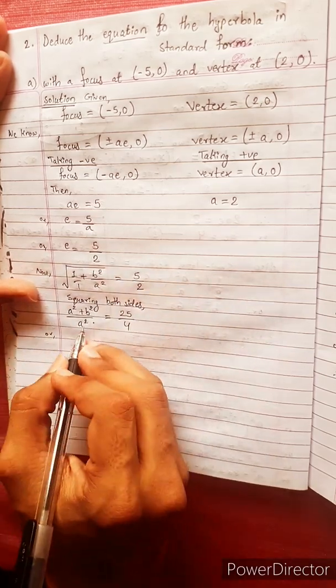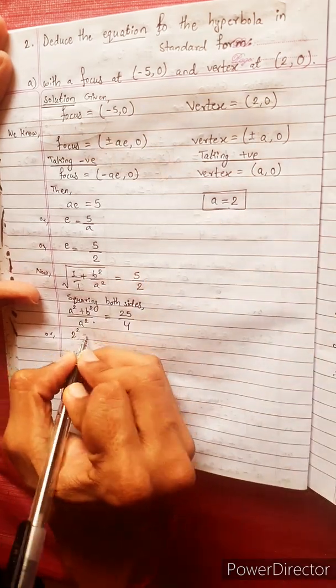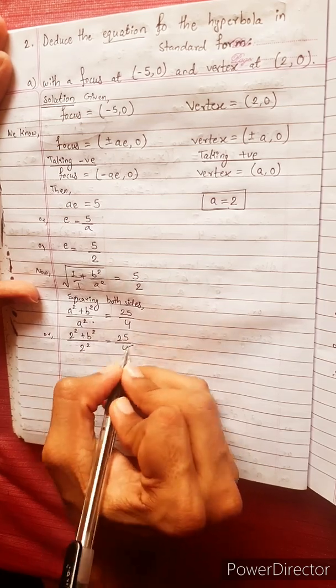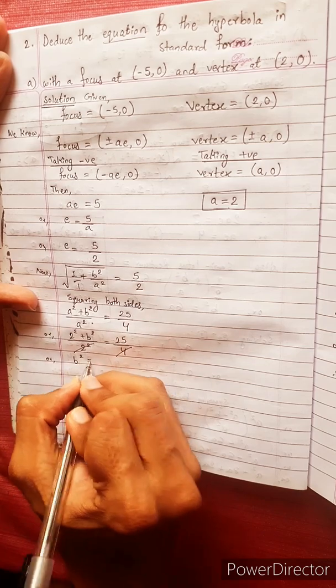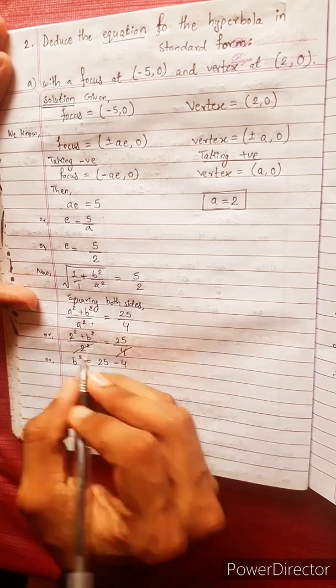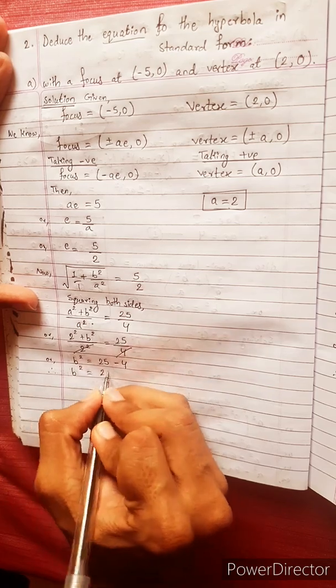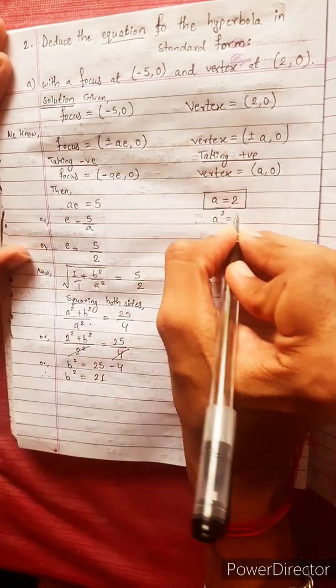Or a equals to 2. 2 square plus b square divided by 2 square equals to 25 by 4. 2 square is also 4. Or b square equals to 25 minus 4. Therefore b square equals to 21. a square equals to 4.